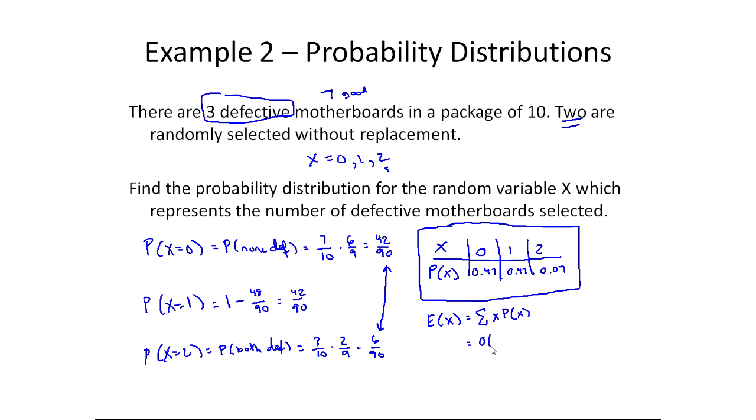And so this would be, in this case, 0 times 0.47 plus 1 times 0.47 plus 2 times 0.07. And so this is essentially 0.47 plus 0.14, which is equal to 0.61.